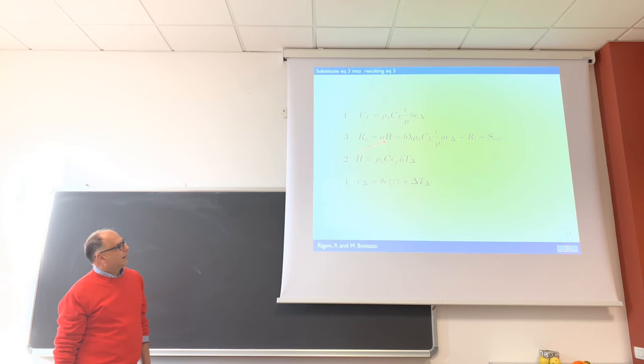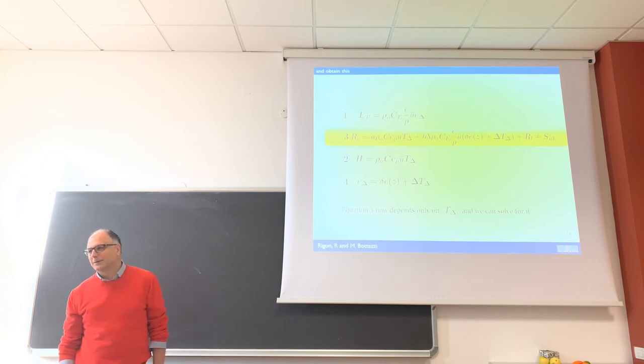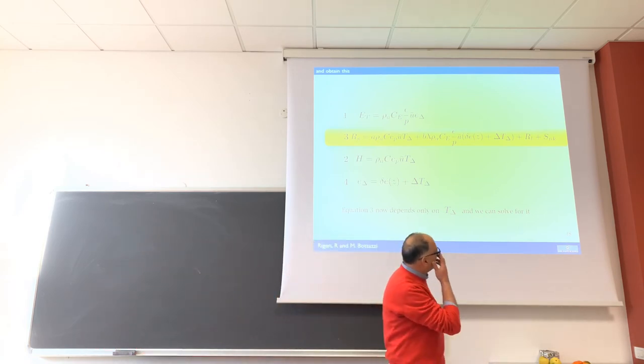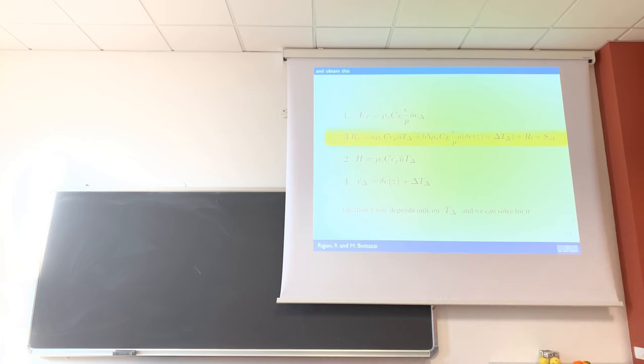The first thing to do is I take delta T and I put it inside the energy budget, like the arrow shows. Then I take the H and I put in place of H. Finally, I take the last one and I put in place of A delta. This equation now is the budget equation where the only unknown is T delta, so I can take away T delta.